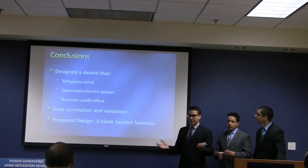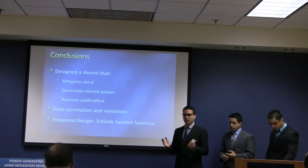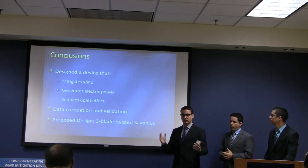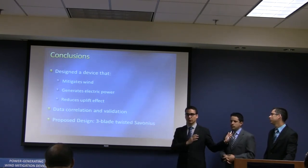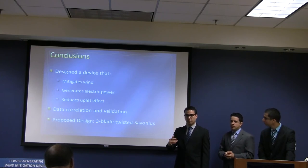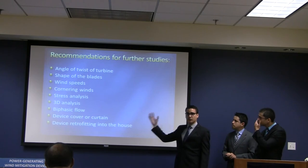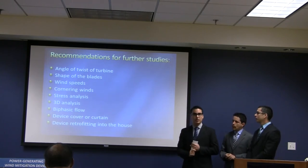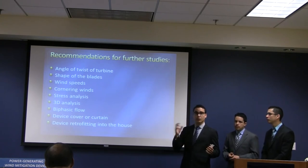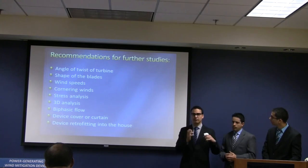In conclusion, we were able to design and predict a device that would mitigate wind, generate electric power at different wind velocities, and reduce the uplift effect by almost 80% based on our simulations and experiments. We are proposing a three-blade twisted Savonius turbine for further analysis. There are still many design variables to be investigated, and our recommendations include: changing the angle between blade shapes, performing 3D simulations instead of 2D to better correlate results, considering bifacet flow to account for rain during a hurricane, and determining how to best retrofit the device into existing houses.